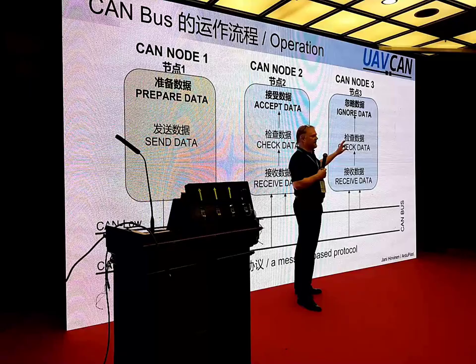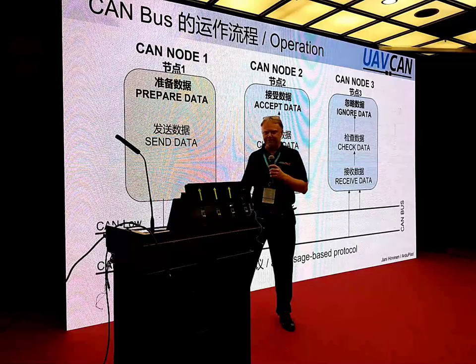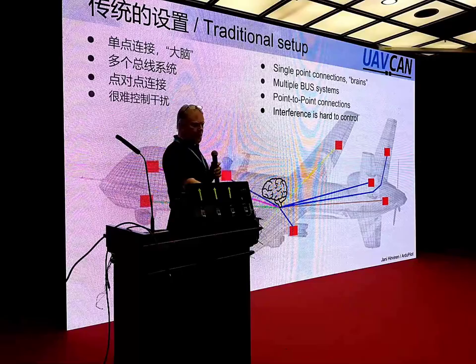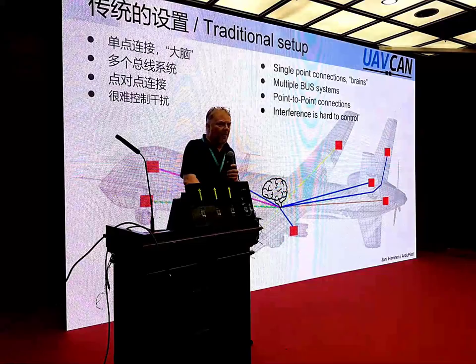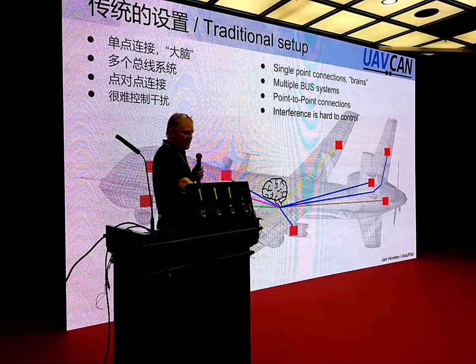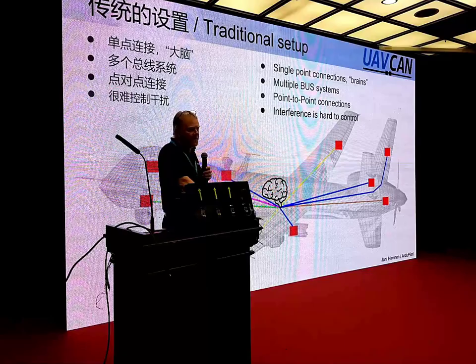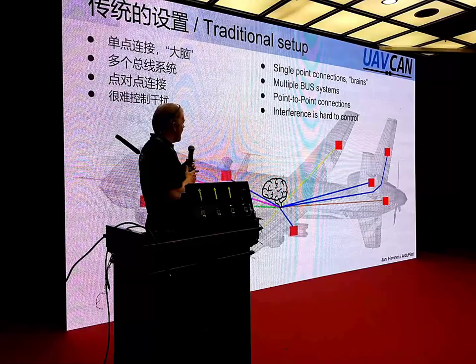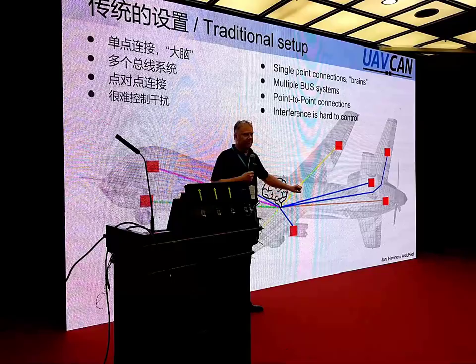If in some situation device number three wants to send something on the bus, it just waits until the bus is quiet and sends it there. Then the others are listening. The traditional way of building UAVs — quite many of you have probably been building some kind of flying things. There's always a lot of cables, and the more big you go, the longer the cables are. Servos and others get interfered pretty fast, which is problematic especially on big systems. You always have to bring your cables all the way back to the autopilot, which is the brains.